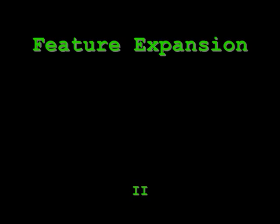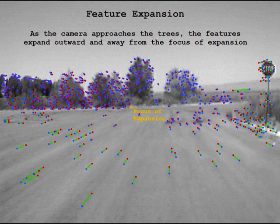As the camera moves towards an object, its expansion rate is proportional to the time to collision. Features expand outward from the focus of expansion, the point in an image from which all the expansion emanates during a collision event.